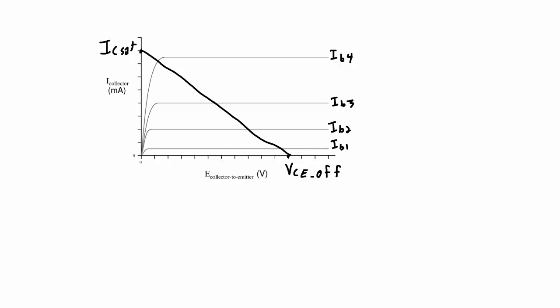A class A amplifier will be biased to approximately the middle of this load line, so right about there. So if you have a circuit, a BJT circuit that looks like this, here's my class A amplifier, VCC, my two biasing resistors at the base.